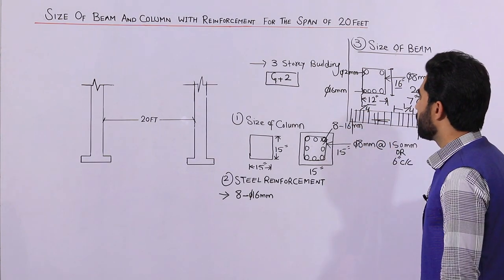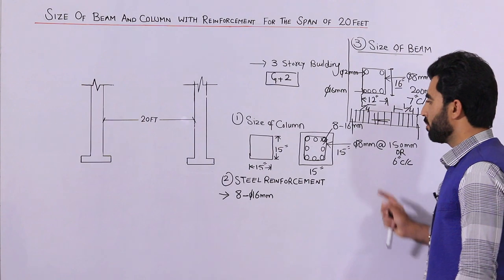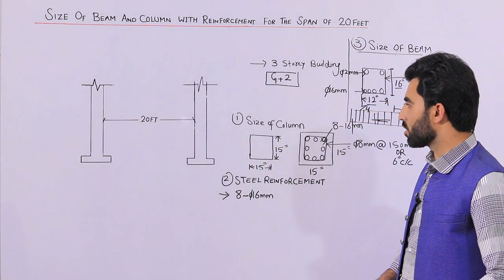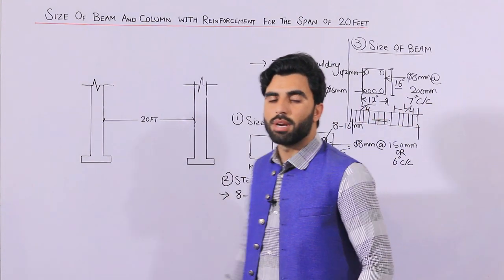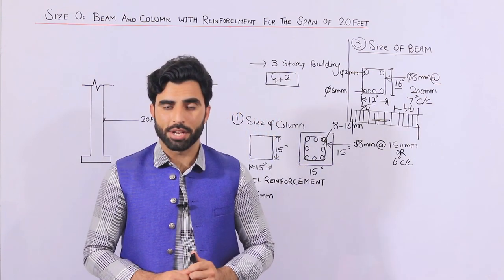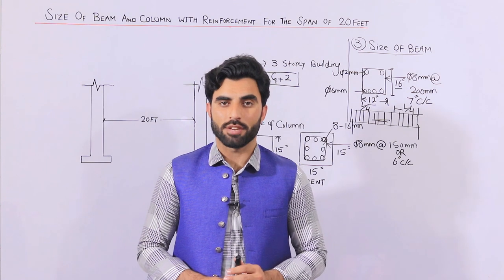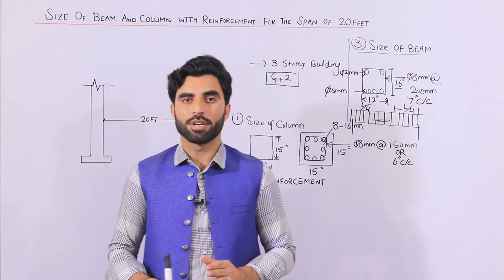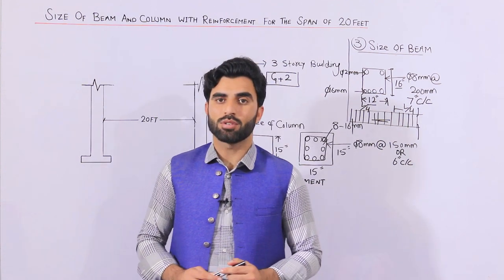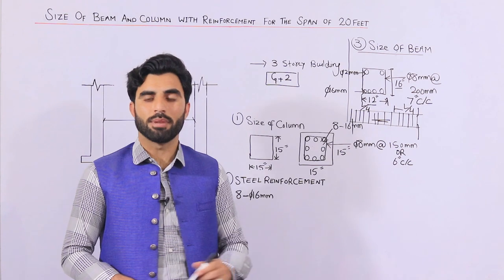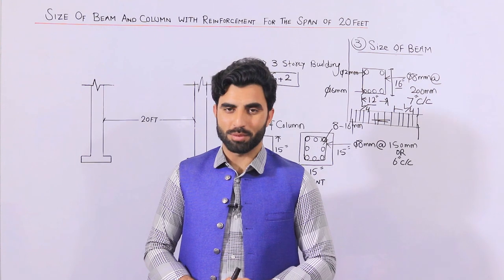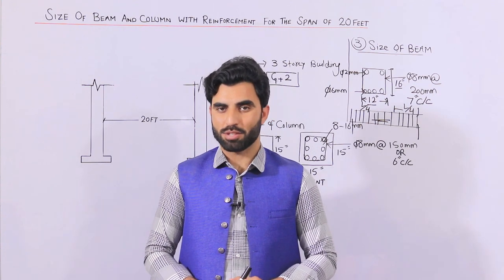These are the steel reinforcement details for the beam and column with their sizes, for a normal residential building — not for commercial buildings. If you are going up to a three-storey building, you should hire a structural engineer for proper structural drawings and design. But if you don't, the minimum values discussed here should not be less than what has been specified. Hope this video helps — thanks for watching, goodbye.